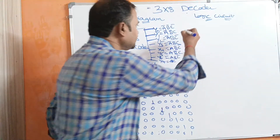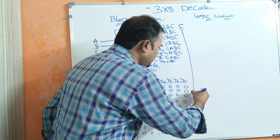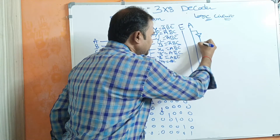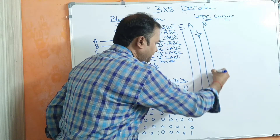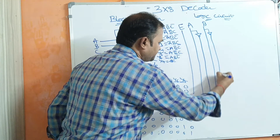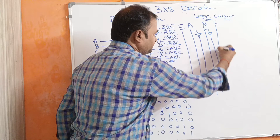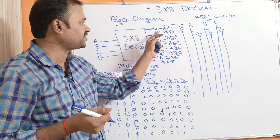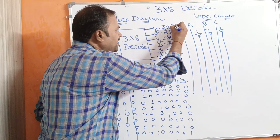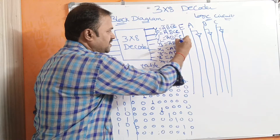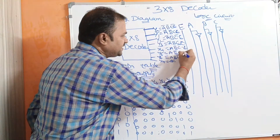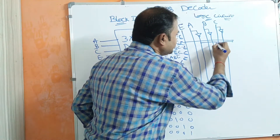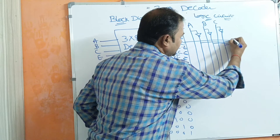Now let us see the logical circuit. Here we require the enable input line E, input line A, and we may get A bar also — for the bar we use a NOT gate, so this line represents A bar. Next input line B, and its NOT gives B bar. Next input line C, and its NOT gives C bar. Let us derive the circuit for Y0. Y0 equals A bar B bar C bar into E, because when the enable input is active only then we get the output.